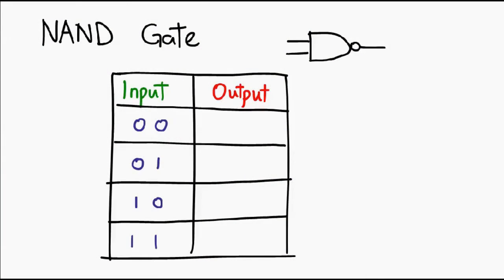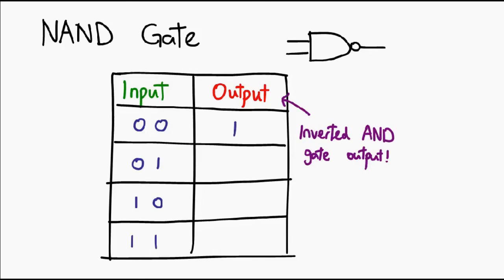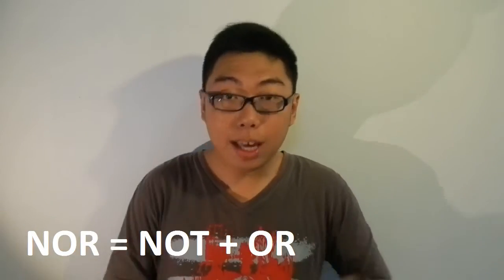Anyway, let's move on to the truth table. You should not have too much difficulty writing it out. Zero and zero is supposed to give you zero if this was an AND gate — therefore, if you invert the output, the output is actually one. Same deal for zero-one and one-zero: since the output is normally supposed to be zero, we flip it and write one. For one and one as input, the output would normally be one, therefore for a NAND gate the output is zero. So let's move on to the NOR gate.